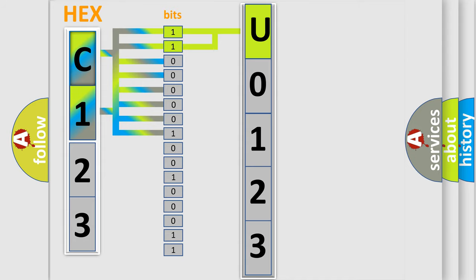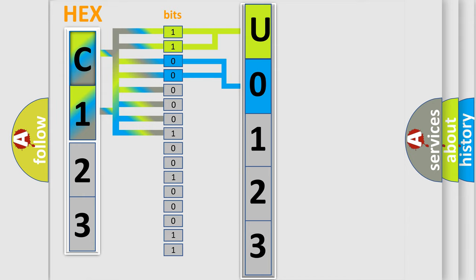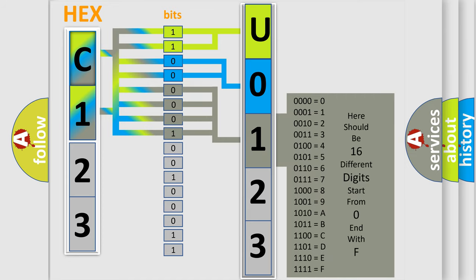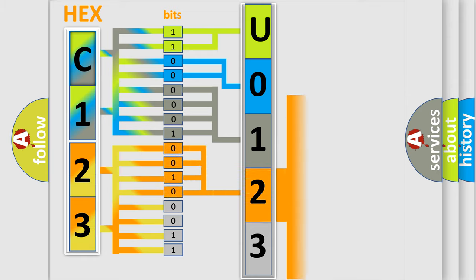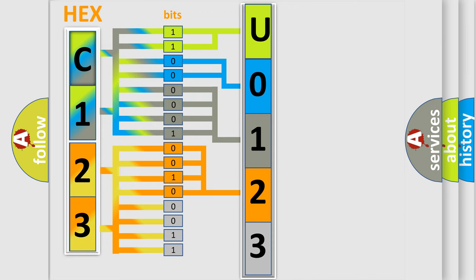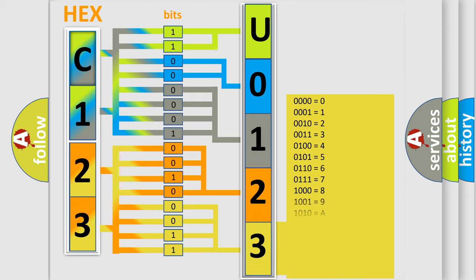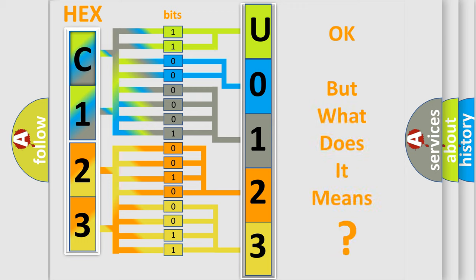The next two bits determine the second character. The last bits of the first byte define the third character of the code. The second byte is composed of a combination of eight bits. The first four bits determine the fourth character, and the combination of the last four bits defines the fifth character. A single byte conceals 256 possible combinations. We now know in what way the diagnostic tool translates the received information into a more comprehensible format.